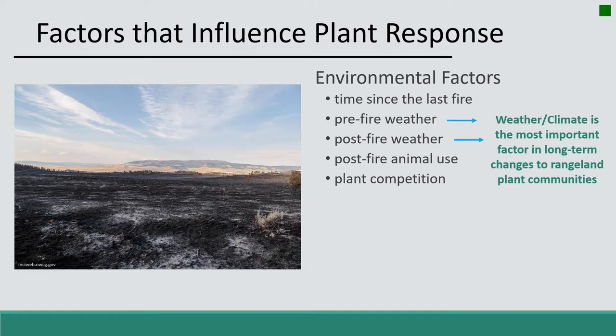Pre-fire and post-fire weather is one of the most important factors for long-term changes in rangeland plant communities. Pre-fire weather influences fuel loads — a good winter and spring typically produces more fuels than drought years — and also affects fire characteristics like wind speed and humidity, which influence burn severity and fire intensity. Post-fire climate is critical for restoration, affecting whether plants survive, get roots established before winter, produce seed, and maintain carbohydrate reserves.